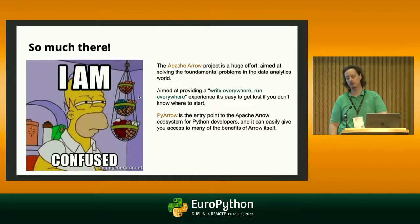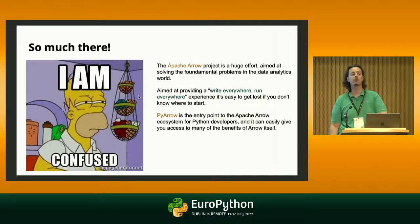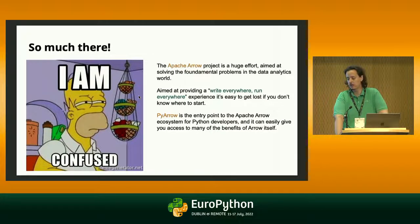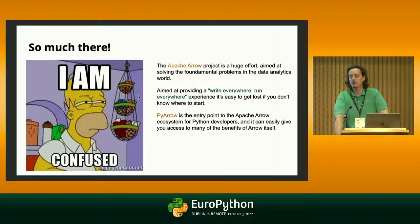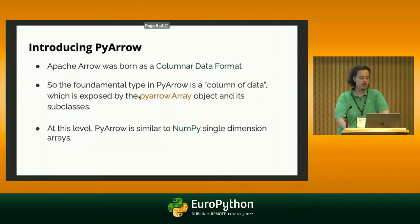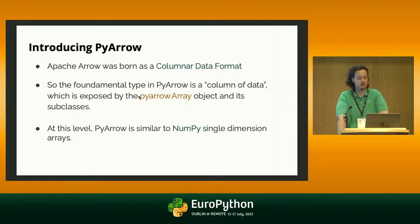We are here specifically to talk about PyArrow, which is the implementation of Arrow for the Python ecosystem. It provides around 90% of what's available in Arrow itself, so PyArrow is a fairly complete implementation — probably one of the most complete implementations. You can freely use it and be comfortable that anything documented in Arrow will be available in PyArrow too.